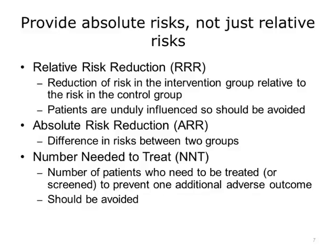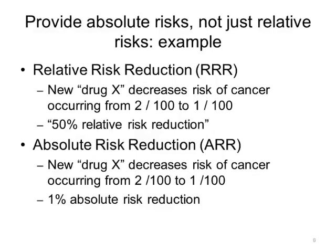The relative risk reduction is the reduction of risk in the intervention group relative to the risk in the control group. The absolute risk reduction is the difference in risks between two groups. The number needed to treat is the number of patients who need to be treated or screened to prevent one additional adverse outcome. Patients are unduly influenced when risk information is presented using a relative risk approach, which can result in suboptimal decisions and should be avoided. The NNT was found to be the most difficult for patients to understand, and it is recommended that this should never be the sole way information is presented.